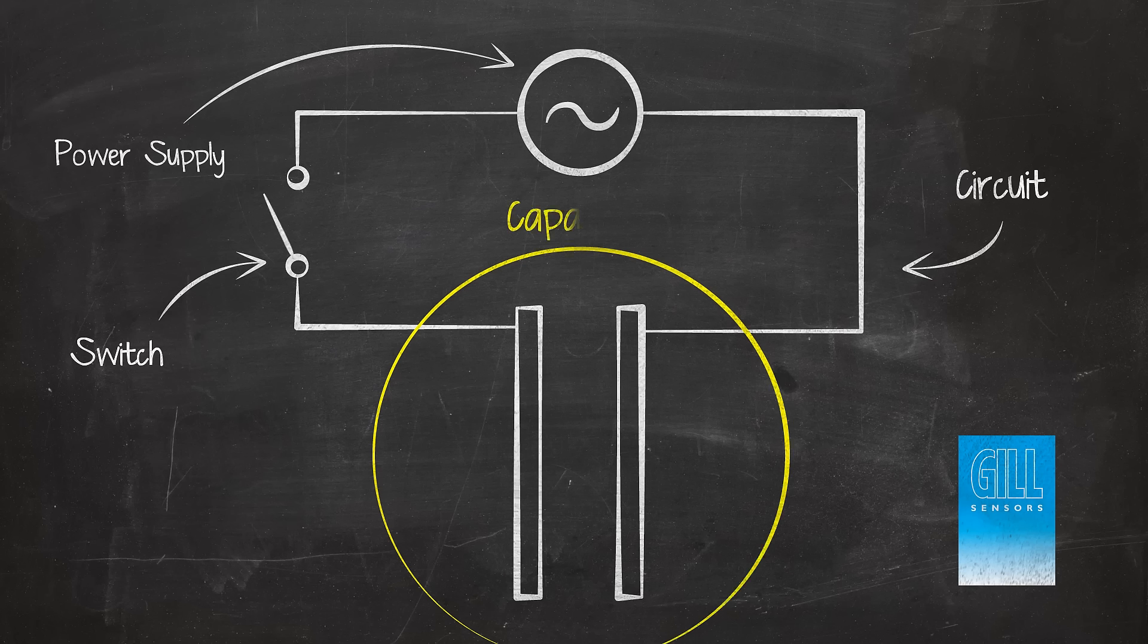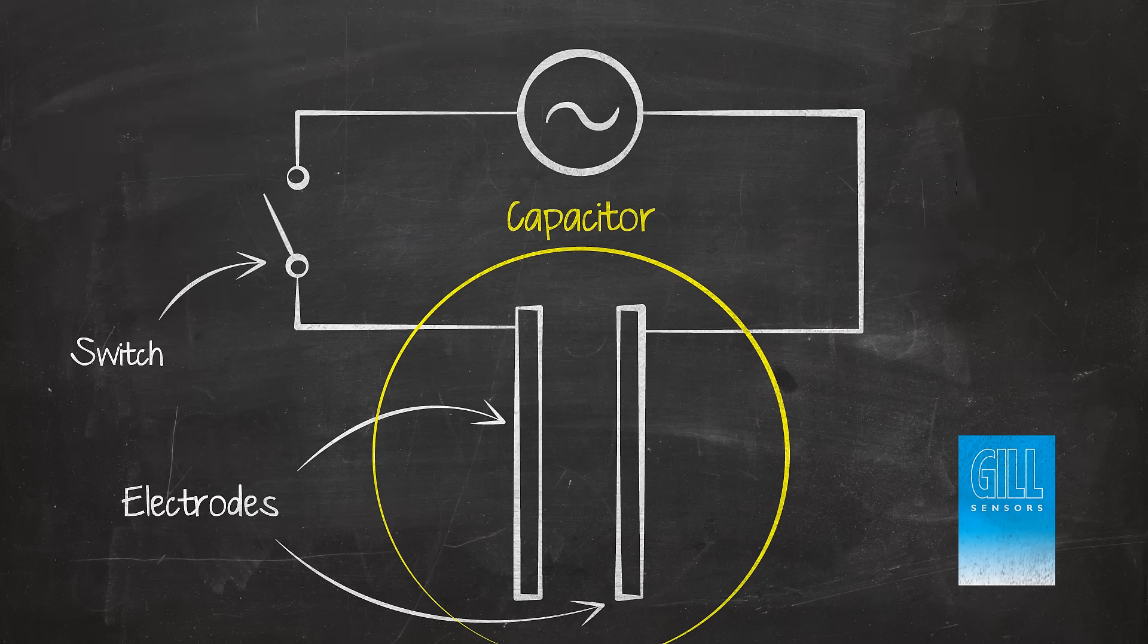A capacitor is formed by two electrodes, electrically insulated from each other. The electrodes themselves must be conductive and are typically made from metal. They can be any shape, though two parallel plates are easiest to visualize.